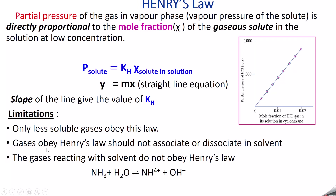Now we go to the limitations of Henry's law. Only less soluble gases obey this law, like oxygen and nitrogen. Gases which obey Henry's law should not undergo any association or dissociation when dissolved in the solvent, and they should not react with the solvent. For example, ammonia gas when dissolved in water forms ammonium hydroxide, which exists as ammonium ions and OH minus ions. Such components will not obey Henry's law.